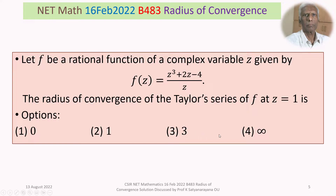Option 3: 3. Option 4: infinity. So we are given a rational function f(z) = (z³ + 2z − 4) / z, and we have to find the radius of convergence of the Taylor series of this function at z = 1. That means the Taylor series has to be developed about z = 1 and we find the radius of convergence.